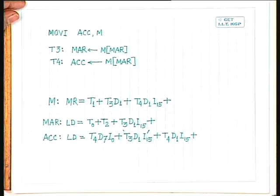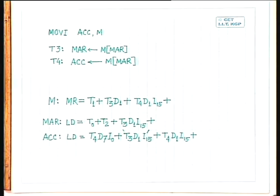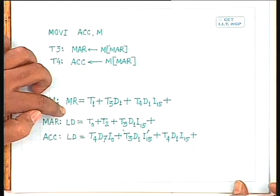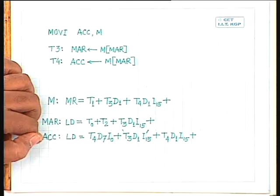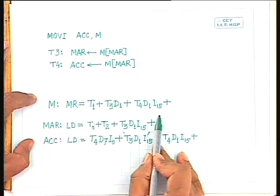For a memory write operation — transferring data from the accumulator to a memory location — we can have direct or indirect memory write, and the memory write (MW) control signal must be activated accordingly. The accumulator output enable must also be activated. By analyzing micro-operations for every instruction, we determine the logic for each control signal and design a combinational circuit to replace the timing and control block.